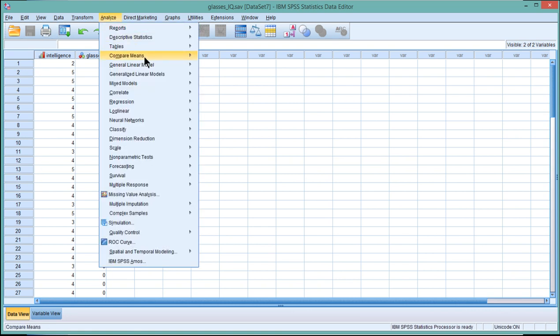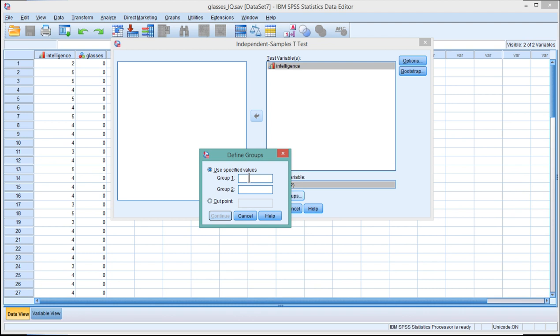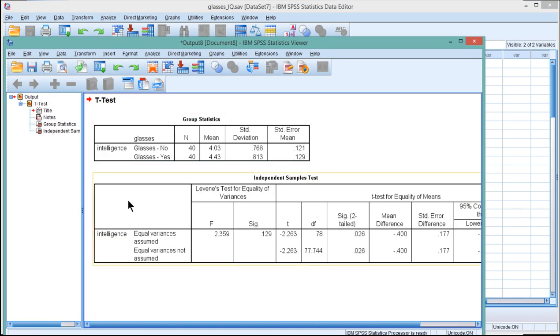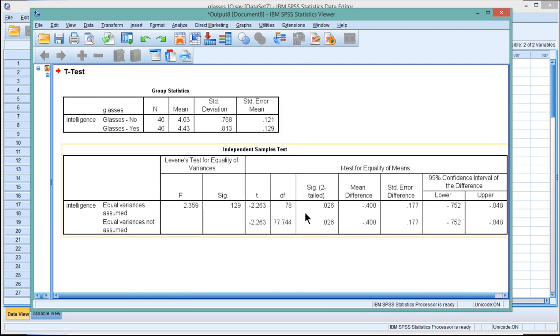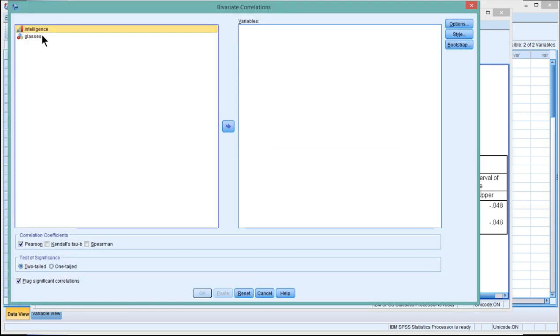This is the independent sample t-test I did with these data previously. This is going back to the example of rated intelligence and whether the person was wearing glasses or not rated by two different groups of people. So 0 and 1 are the grouping variables. We can see that I rejected the null hypothesis of equal perceived intelligence with p equal 0.026 and wearing glasses has a higher perceived intelligence level. What would happen if I just ran a correlation between a dichotomous variable like glasses and a continuous variable like intelligence?